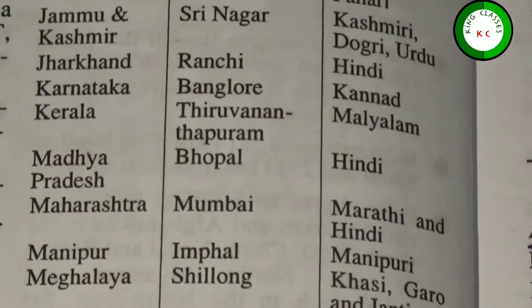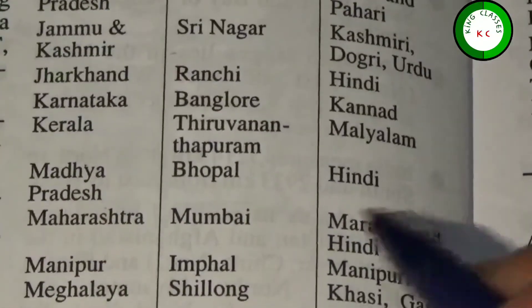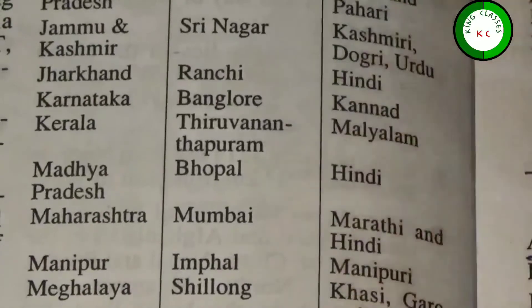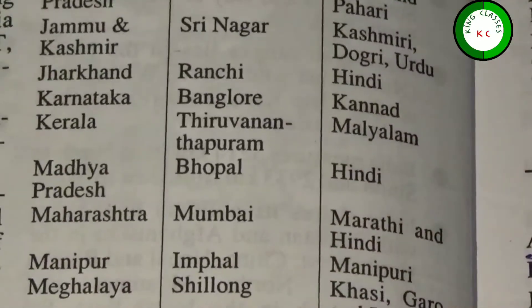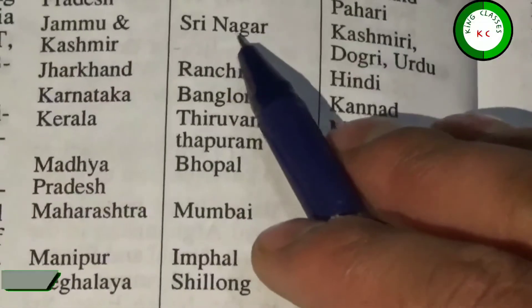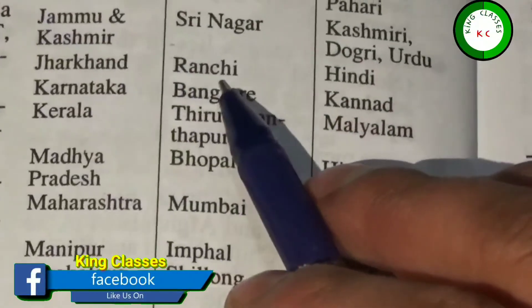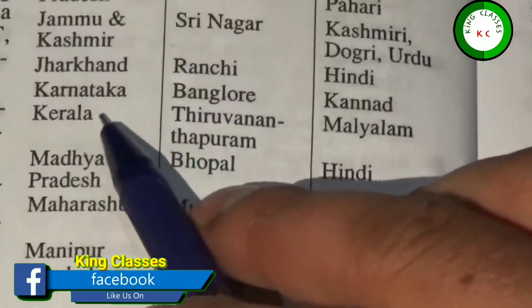Jammu and Kashmir — its capital is Srinagar. Jharkhand — Ranchi.